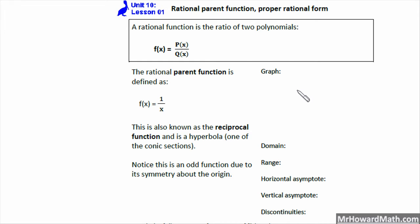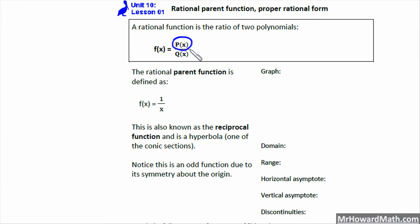This video is unit 10 lesson 1 covering rational parent function and proper rational form. This is our start at looking at rational functions. A rational function is the ratio of two polynomials — polynomial P of X divided by another polynomial Q of X.